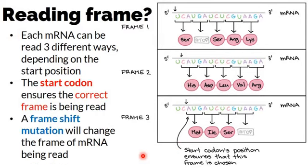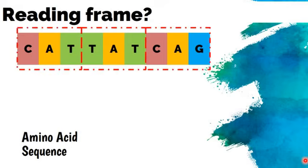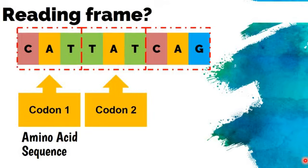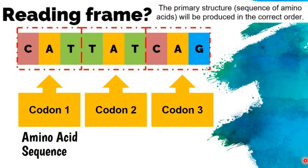A frameshift mutation is something that can occur that changes the frame of the mRNA being made. This means that when we're reading our mRNA, if we needed frame one to make the correct amino acid, an issue pushing it to the third frame means that we're making completely different things. So here I have a sequence of DNA, and I'm going to show in red boxes each codon that would be read: the first codon CAT, the second codon TAT, and the third codon CAG. The amino acid sequence is determined using those sequences of codons, so we would have amino acids 1, 2, and 3.